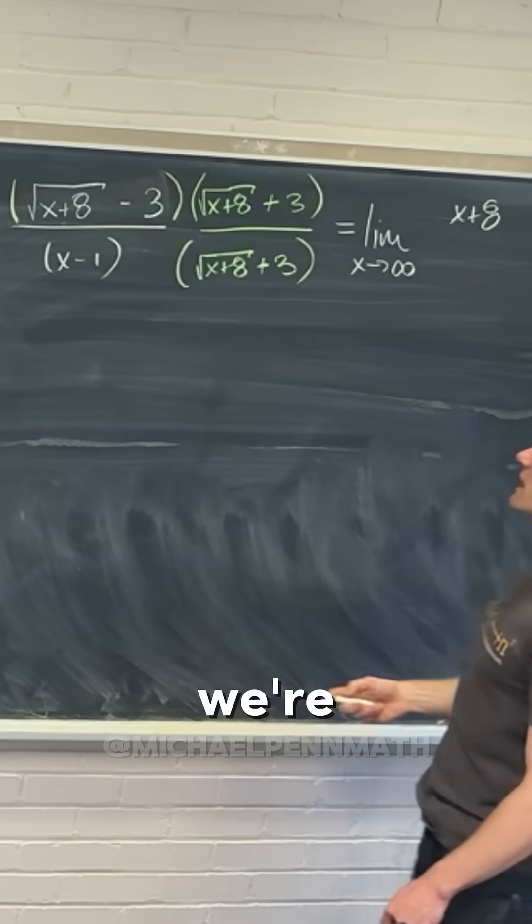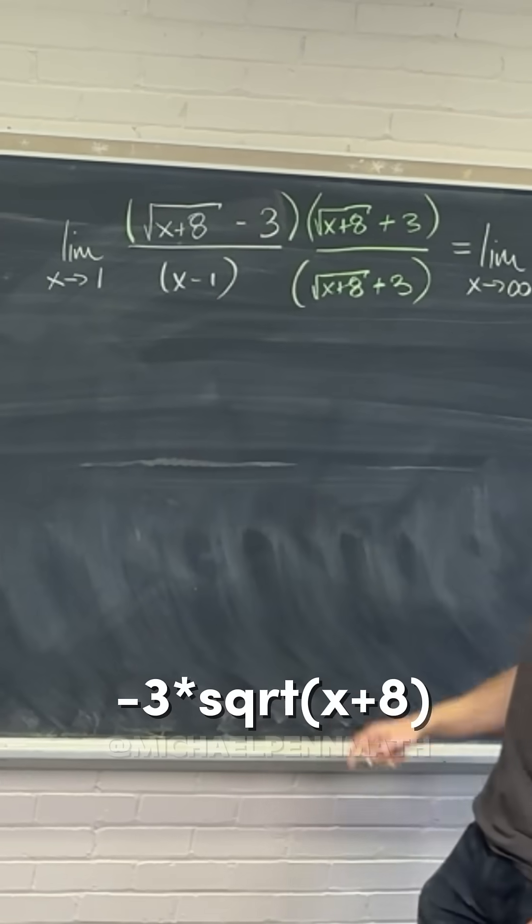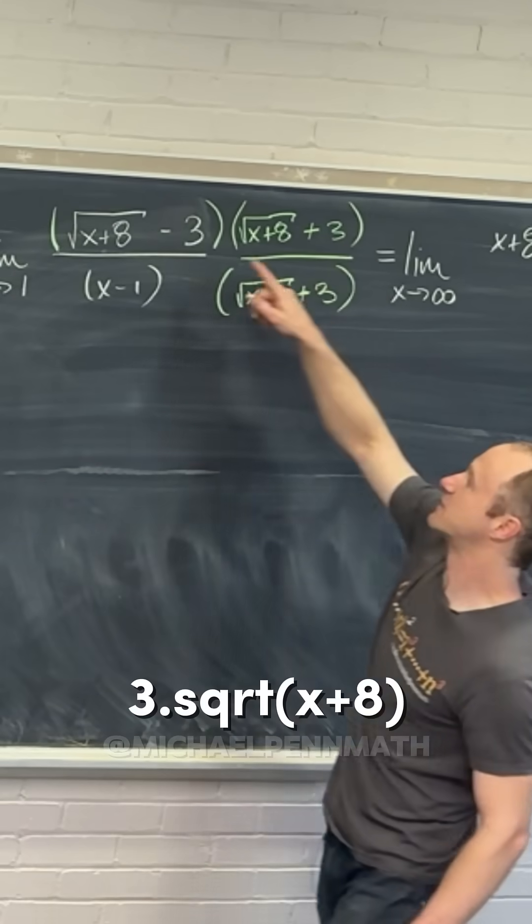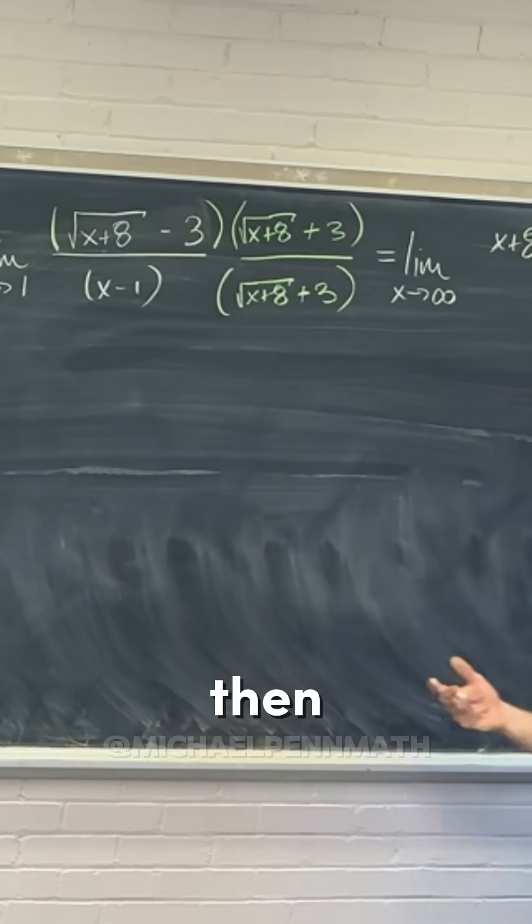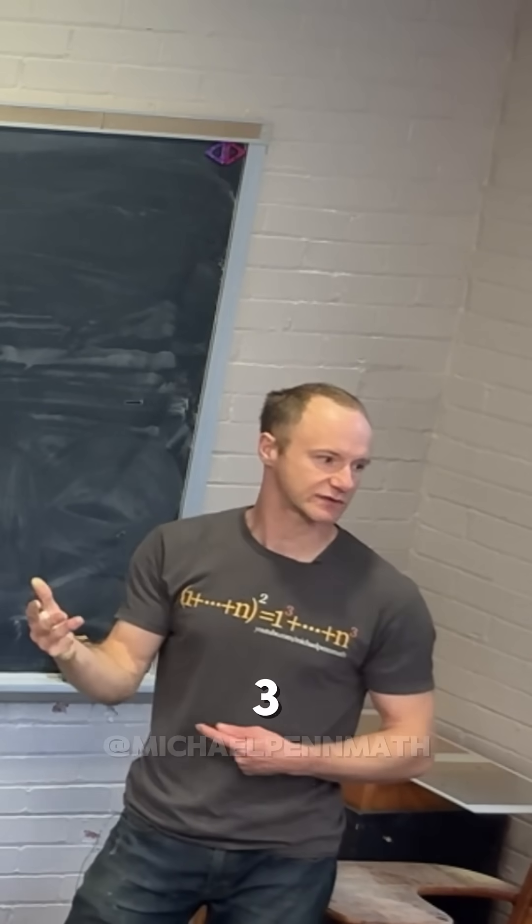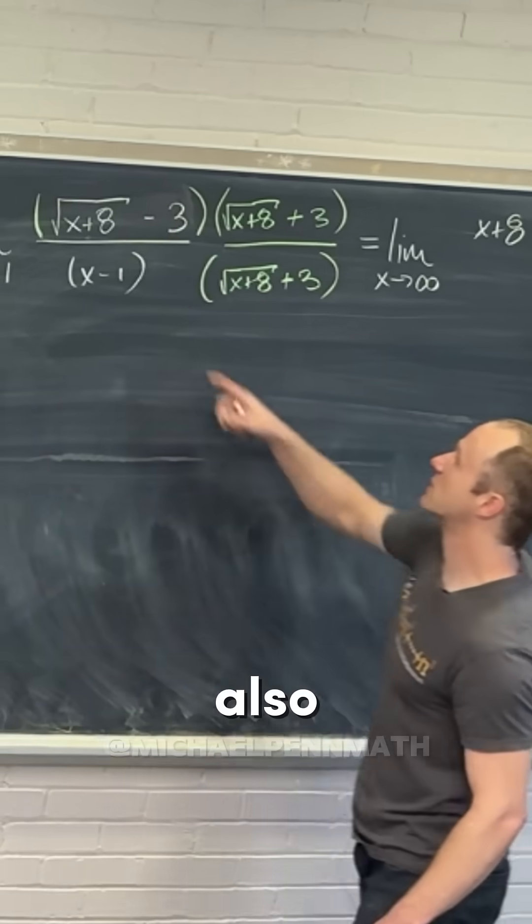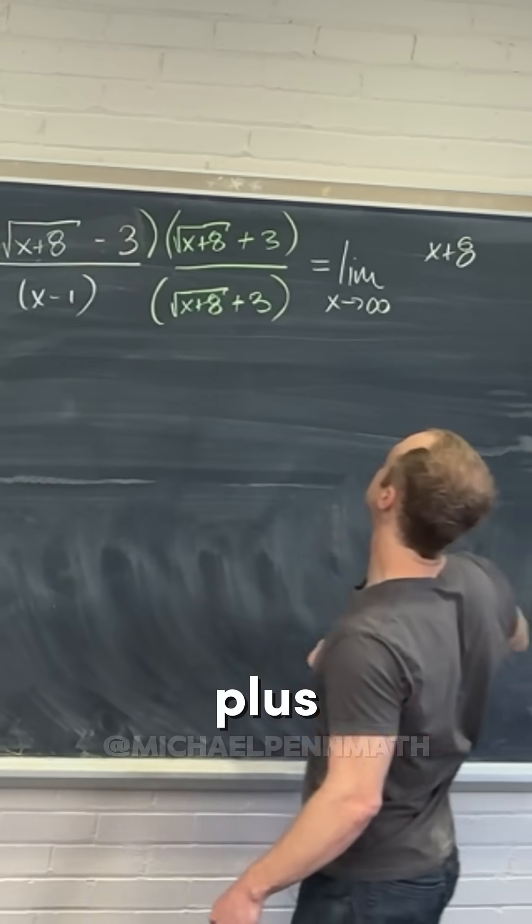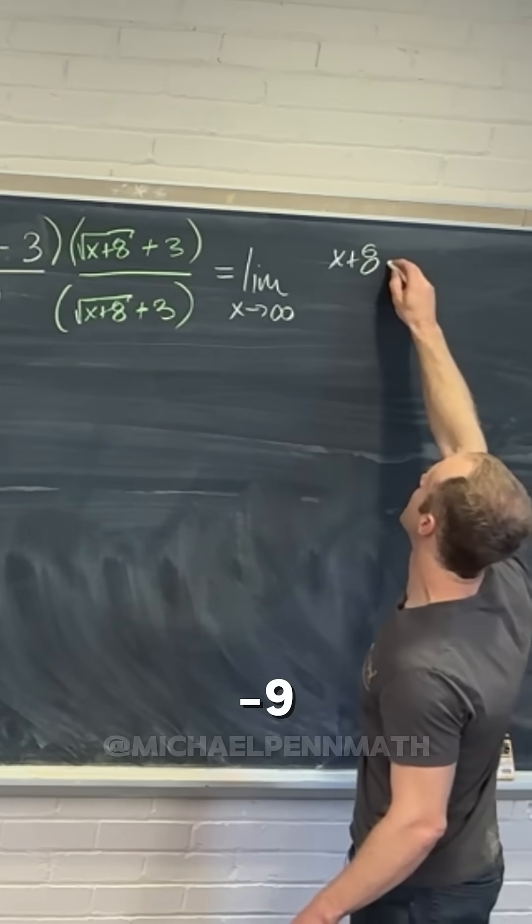Then we have negative 3 times the square root of x plus 8 and positive 3 times the square root of x plus 8. If you add those together, you get zero. We also have negative 3 times plus 3, giving us minus 9.